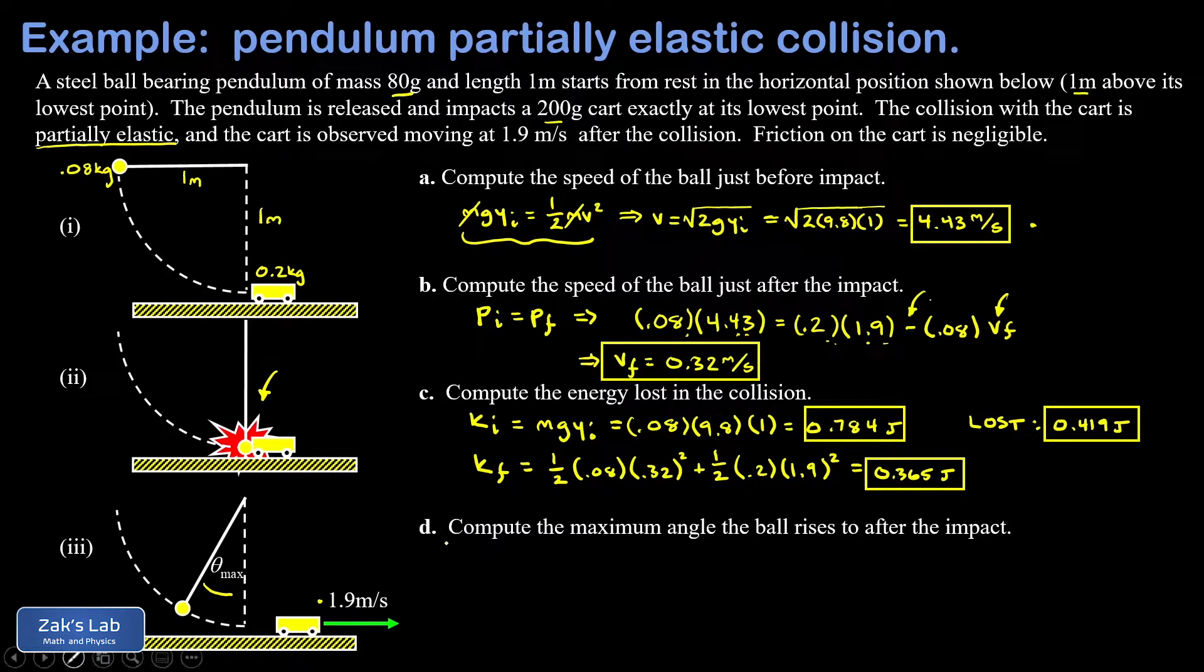Finally, in part D, we want to get the maximum angle the ball rises to after the impact. We know how fast it's moving initially when it's at its lowest point: it's moving 0.32 meters per second. As it rebounds to the left, that kinetic energy is going to be converted into its final potential energy. So we know we can figure out what its maximum Y value is. The tricky part of this is to relate that to the angle.